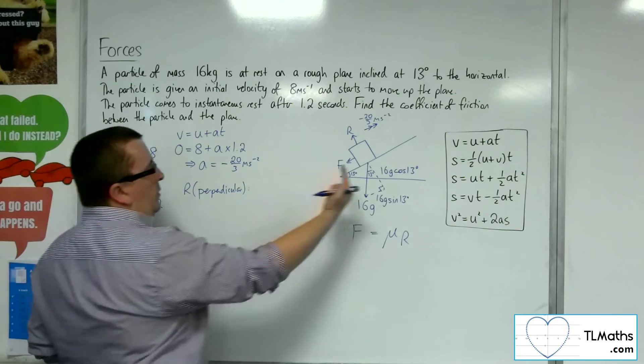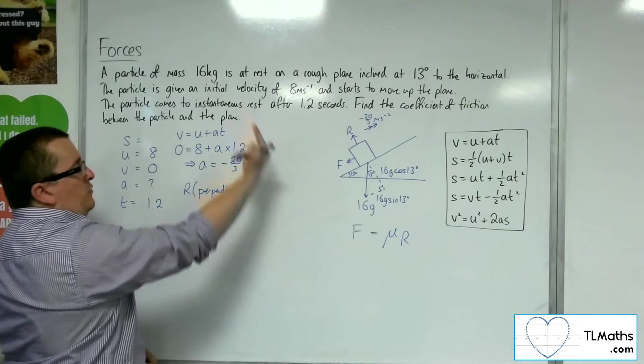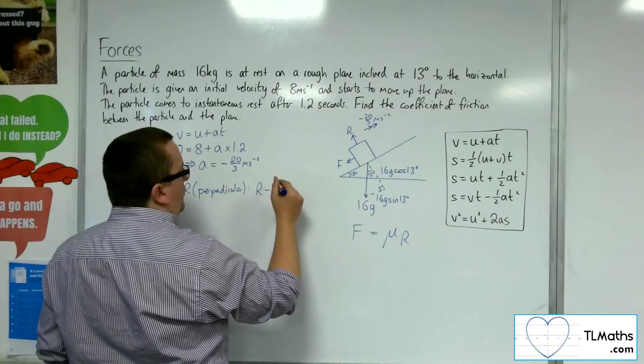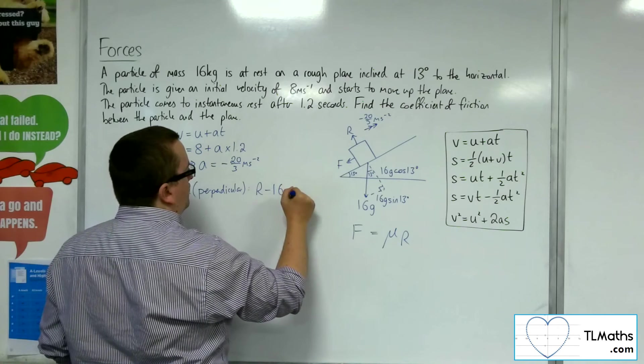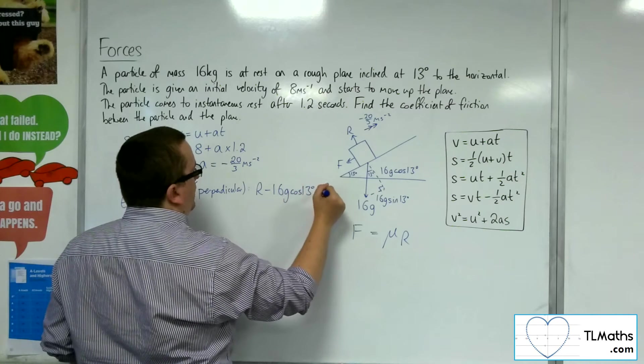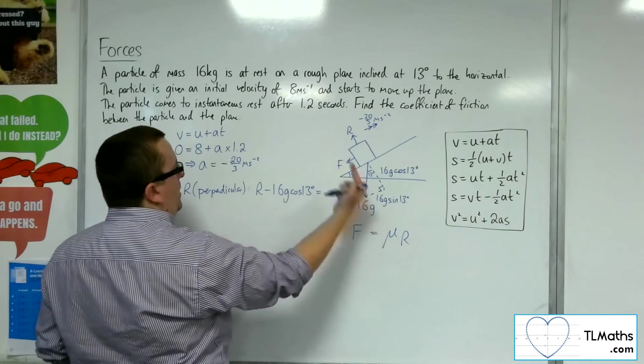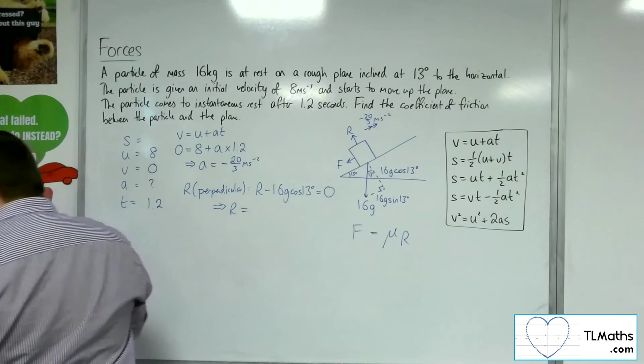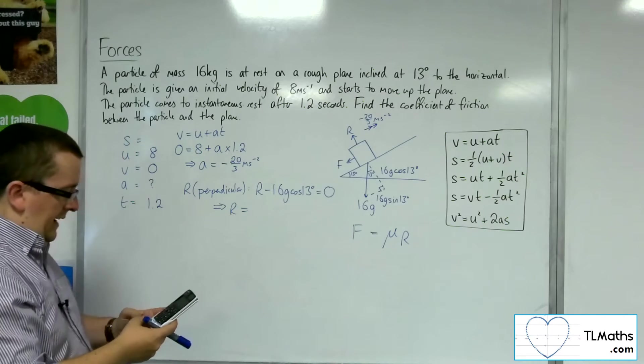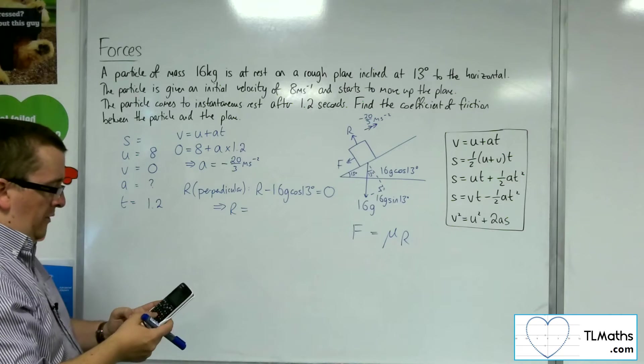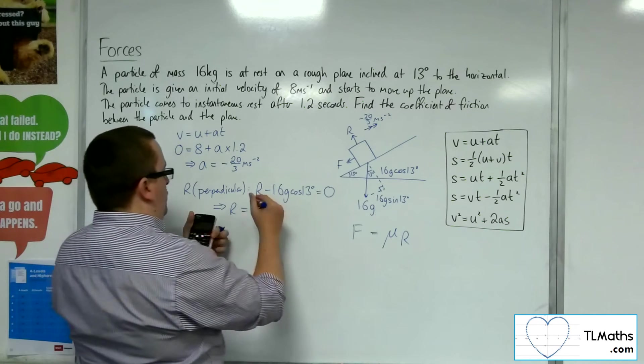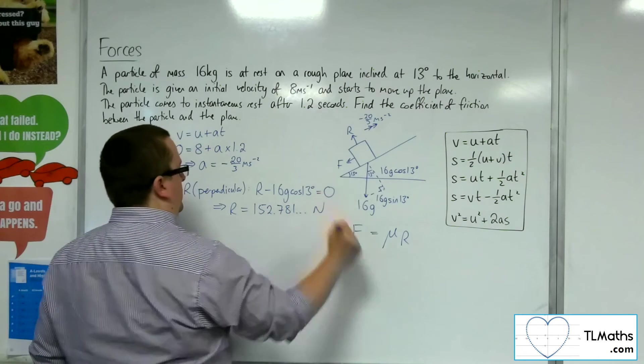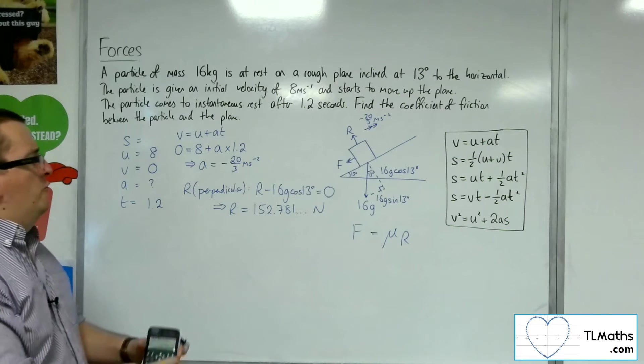I take upwards as positive, or perpendicular to the plane in that direction as positive. I've got the R and I've got the 16g cosine 13. There's no acceleration perpendicular to the plane, so that's equal to 0. That gets me my R. 16 times 9.8 times cosine of 13, that's 152.781 newtons. So that's my normal reaction force.